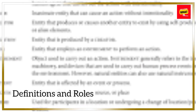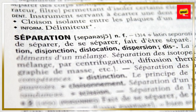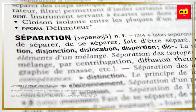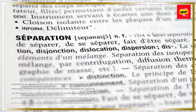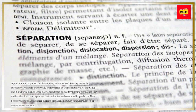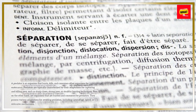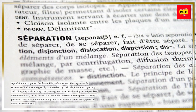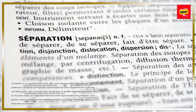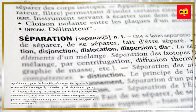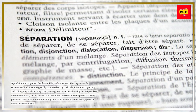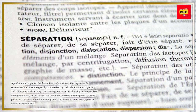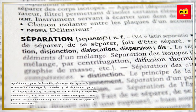Definitions and Roles. A predator is an organism that hunts, kills, and consumes other organisms for sustenance. Predators are typically characterized by their adaptations for capturing and killing prey, such as sharp claws, strong jaws, or stealthy hunting techniques.